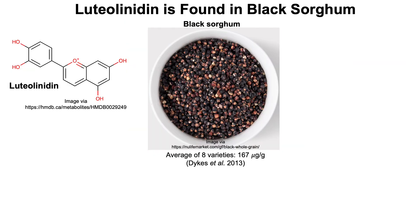Last but not least, luteolinidin is found in black sorghum. A study looking at eight different varieties of black sorghum — a grain — found an average luteolinidin concentration of 167 micrograms per gram. Red sorghum is also sold but has significantly lower amounts of luteolinidin, and some varieties don't have any. Black sorghum is also relatively hard to find — I could only find one store selling it online, and it was sold out.